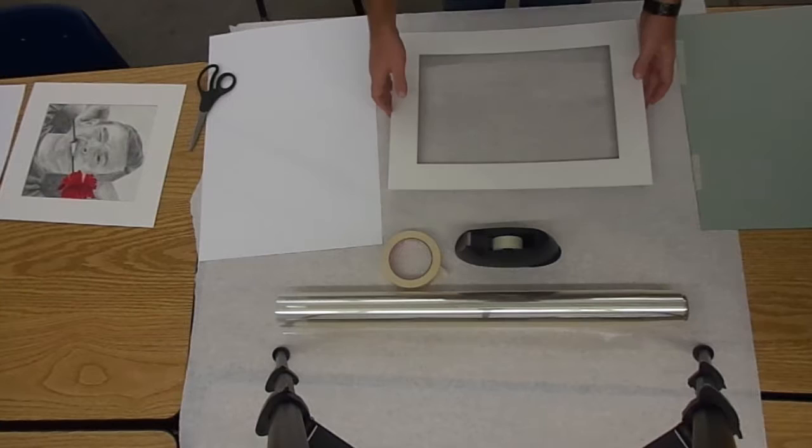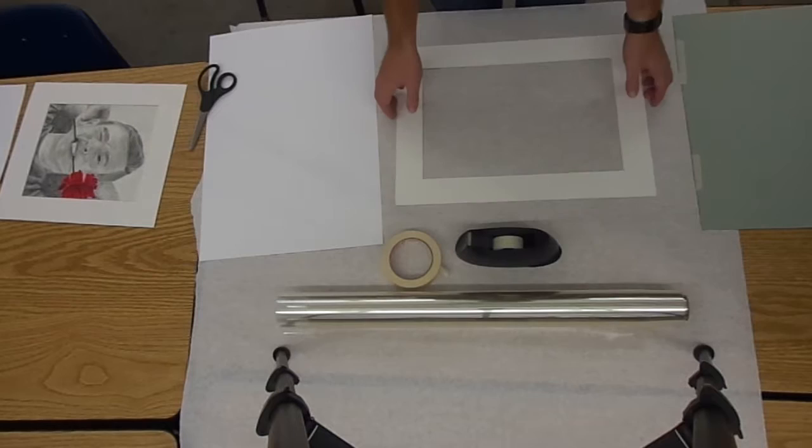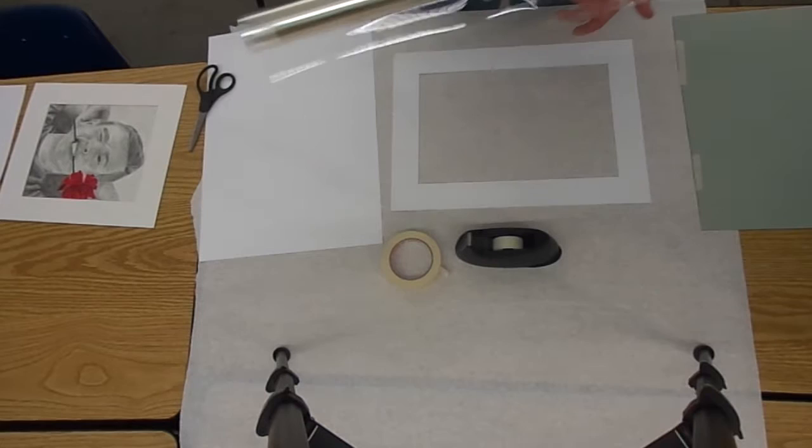The front, for the most part, is usually white or off-white for most of the mats. You'll see that there's a bevel. That also indicates that that is the front of the mat. So we're going to place this upside down.